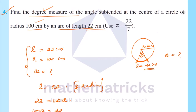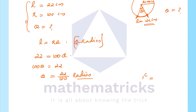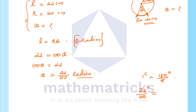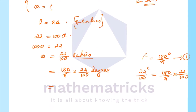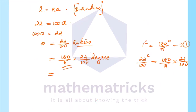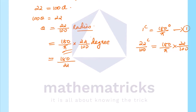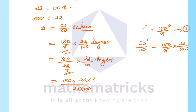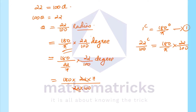Now to find the degree measure of θ = 22/100 radian. Using 1 radian = 180/π degrees, we get 22/100 radian = (22/100) × (180/π) degrees. Substituting π ≈ 22/7: this becomes (22/100) × (180 × 7/22) = (180 × 7)/100. Simplifying: 1260/100, and 200 divided by 5 gives 9, so we get 63/5.